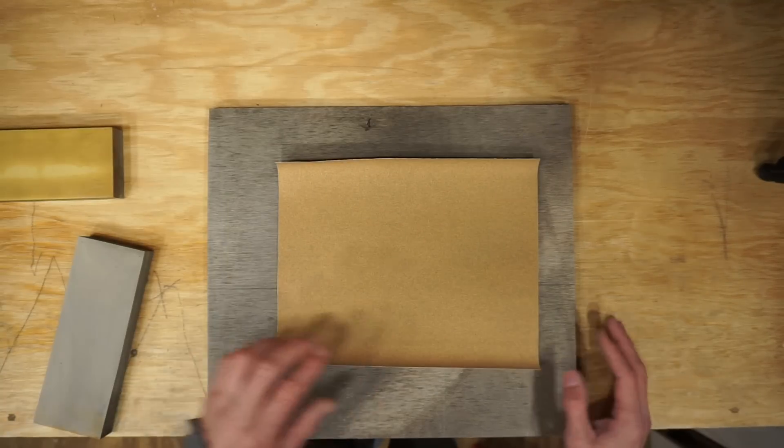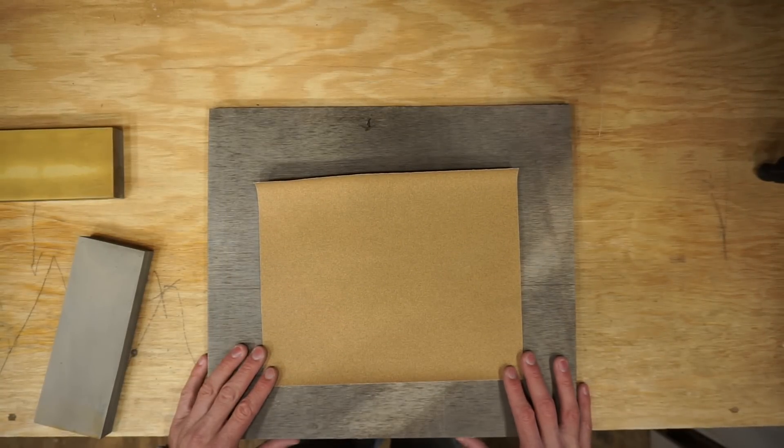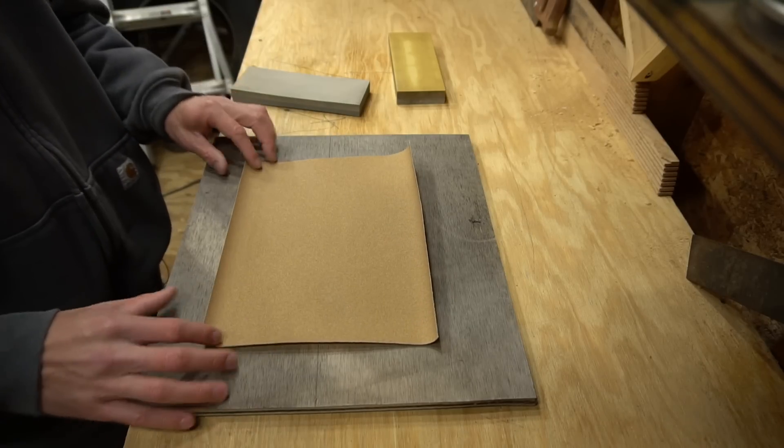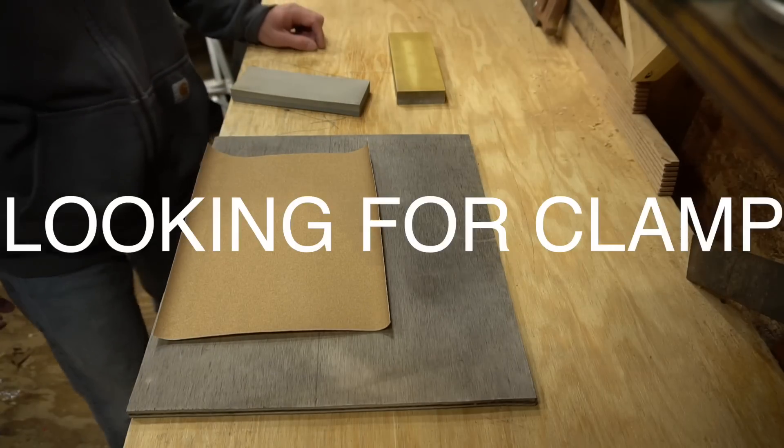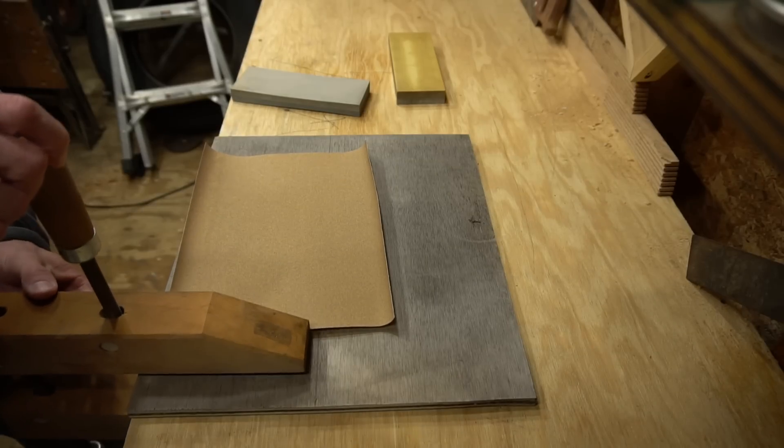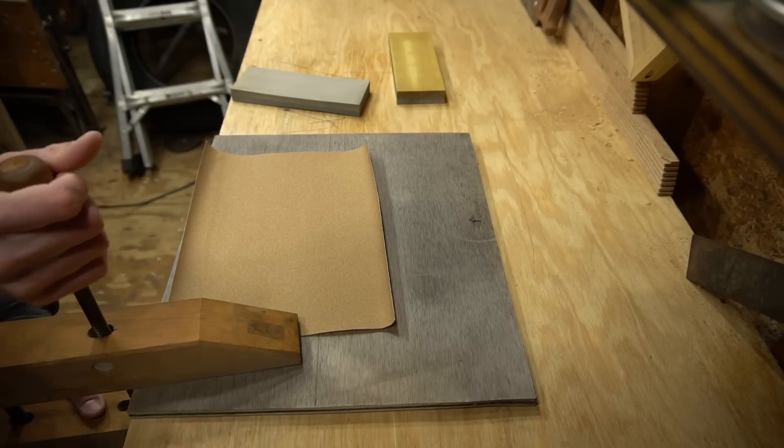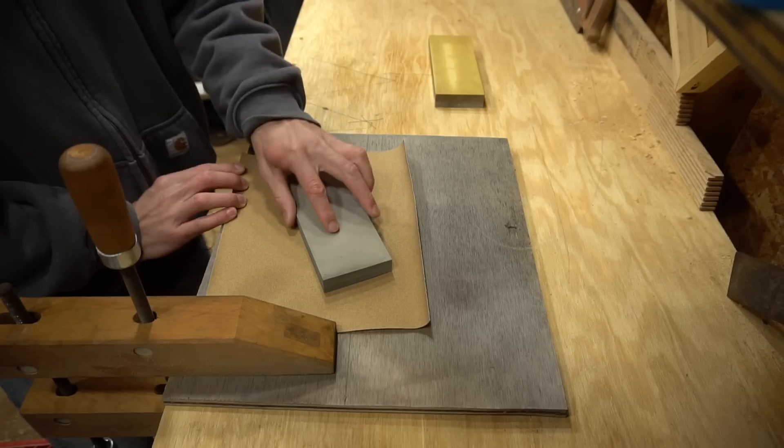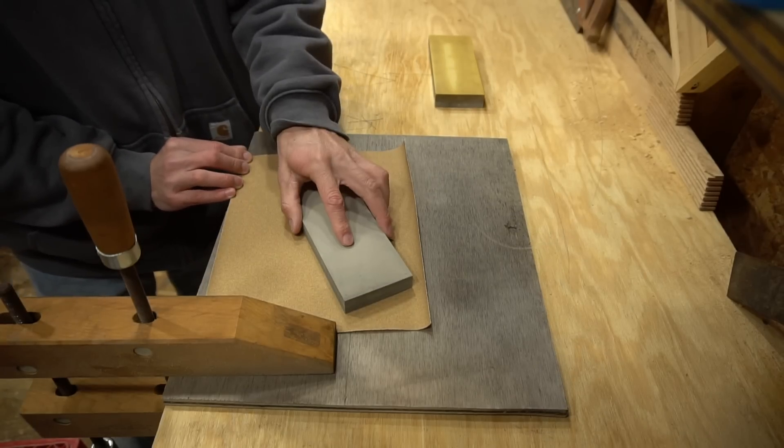So what I use to flatten is basically just a piece of sandpaper. Not super high tech, just a piece of sandpaper laid on a flat surface, and I like to clamp it down. This is just a wood clamp if I can get this adjusted right. There we go. And then I basically just take my wet stone, put it on the sandpaper and go to town.